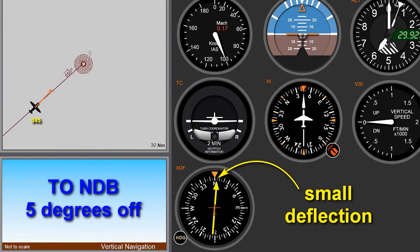A quick recap: we are flying on a 45 bearing to this NDB, but the wind blew us a little to the left and I am now at 50 degrees already. We can see on the CDI needle a small deflection. The CDI needle is not very sensitive — it has a 360 scale, so one degree is just a tiny movement. With the VOR, that is even a little bit better.